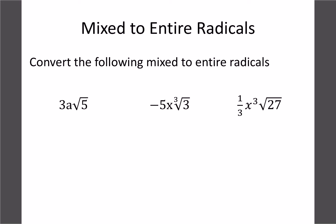Let's quickly review yesterday's process. When we had something like 3√5a, we would change the 3 to √9, square both parts, and then have the 5 as our leftover. Multiplying gives us √(45a²). So the backwards process means we need to change 45 into √9 times √5. The challenge is deciding what to break it into.